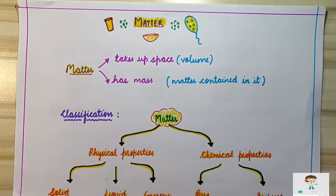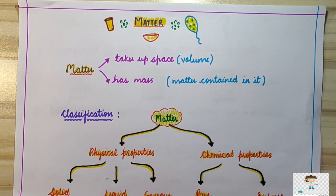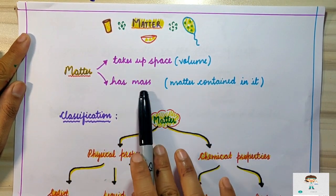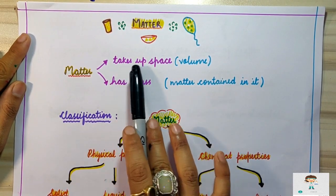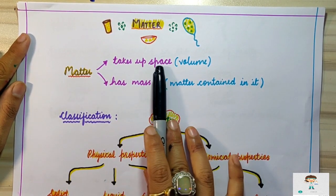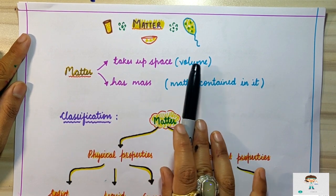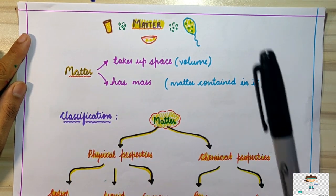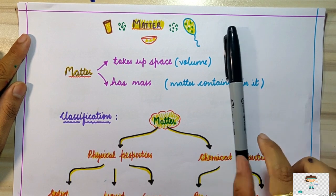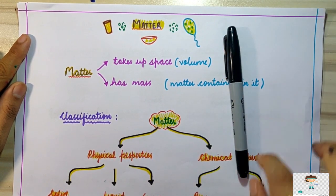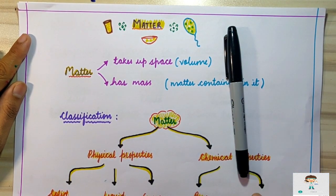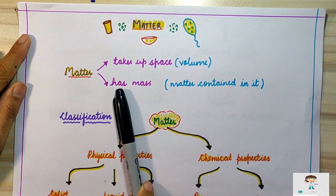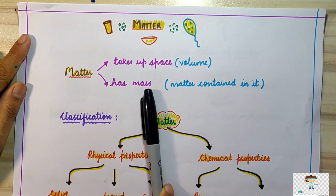First, what do you mean by matter? Matter is anything around us which has mass and which occupies space. What is the meaning of space? Space is the volume occupied by a substance. For example, if I am keeping this pen on this paper, this pen is occupying certain space on the paper, and that space is known as volume.